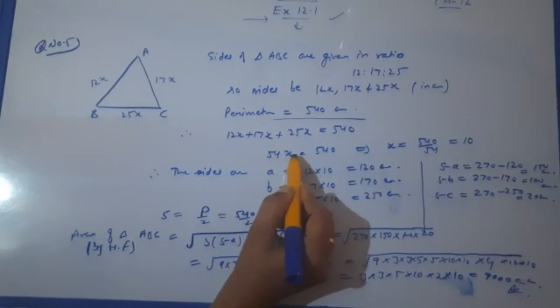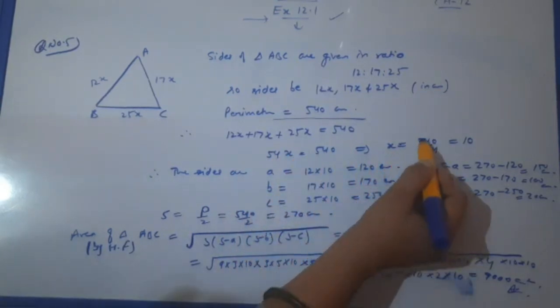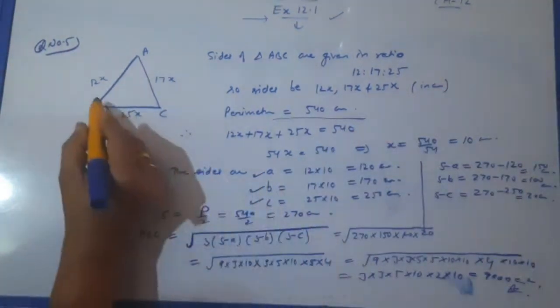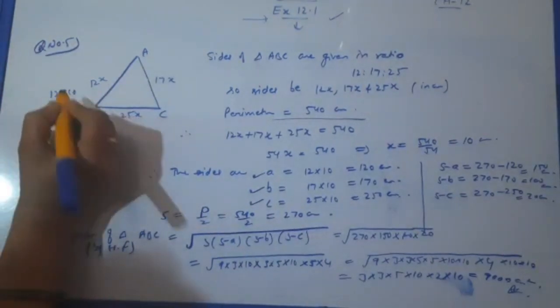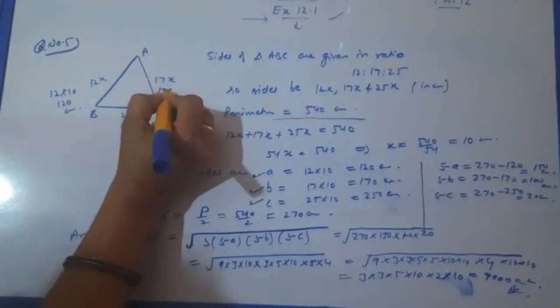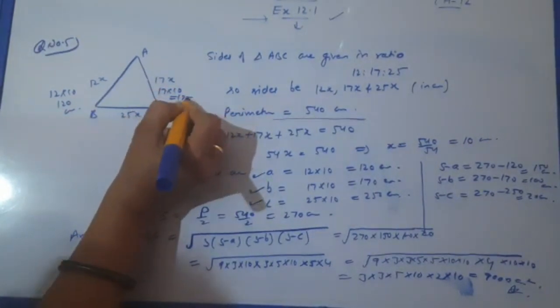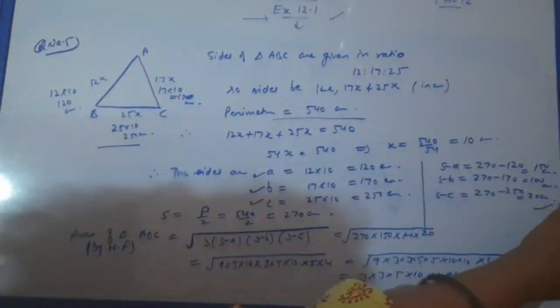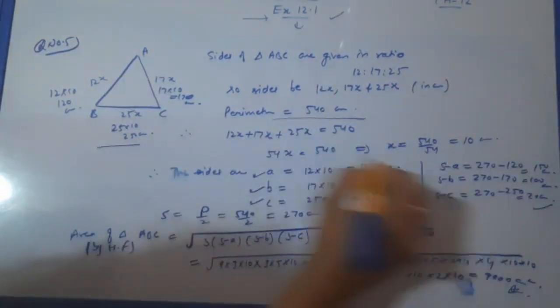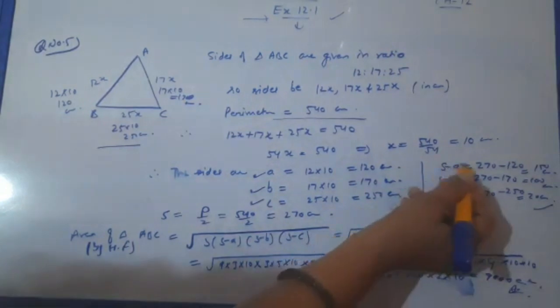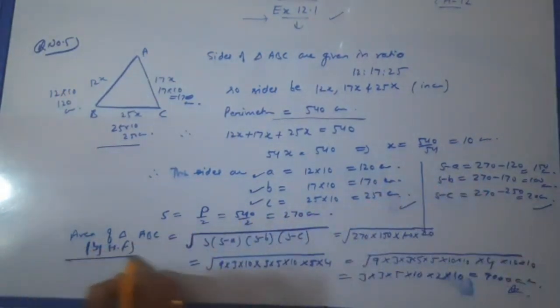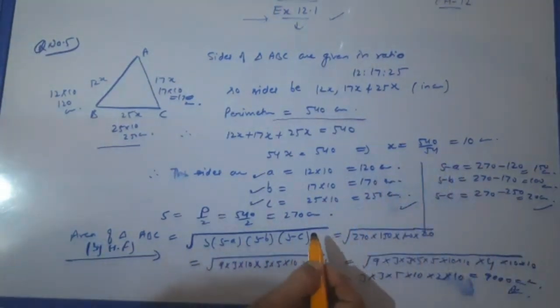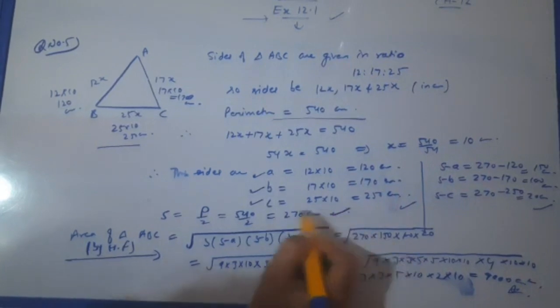When we are adding all these, we are getting the perimeter: 12x + 17x + 25x = 540. When you add all, you will get 54x = 540. We can find the value of x. We will get all the sides.